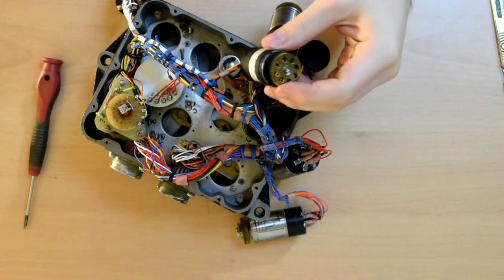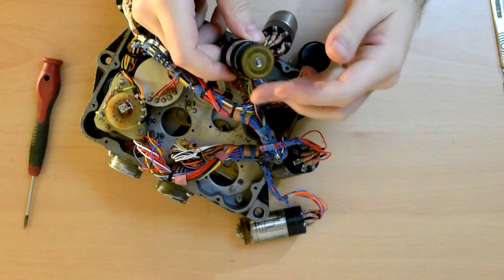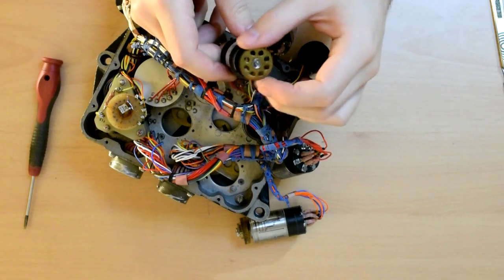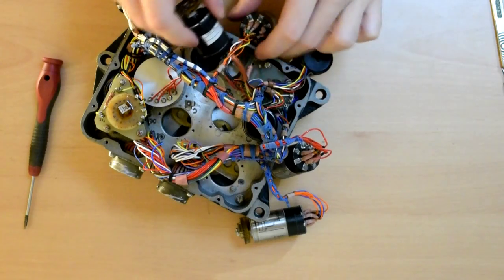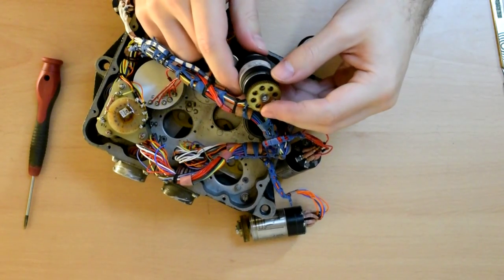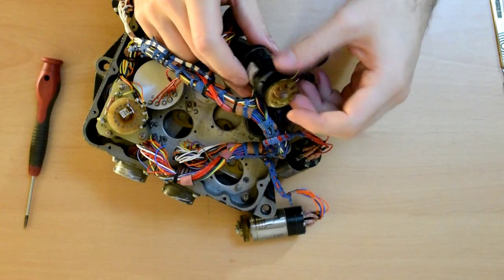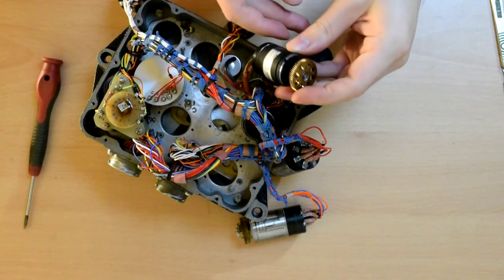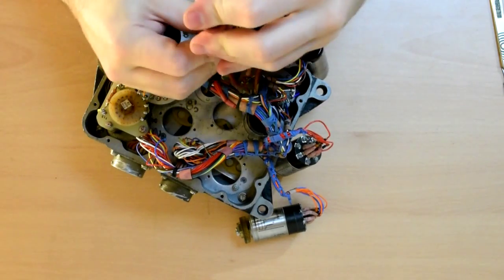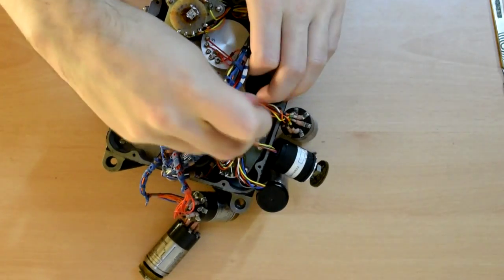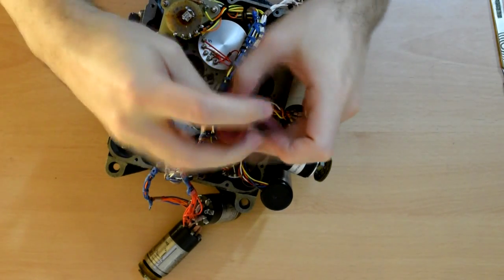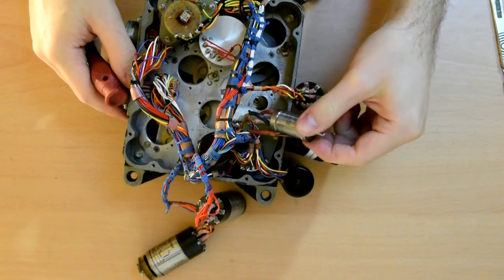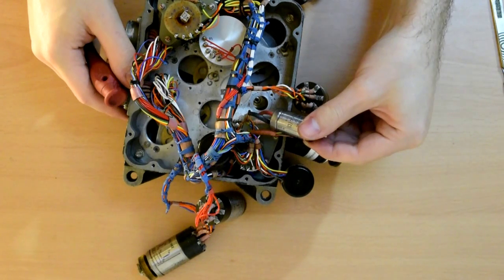This part's branded Ferranti. Everything else is branded Smiths. And there is nothing on it which says what it is. Feels a bit like a wire wound potentiometer of some sort. And this bit is a synchro control transmitter.